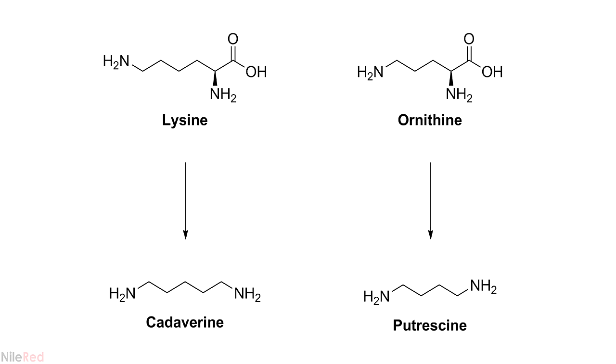Putrescine comes from the breakdown of the amino acid ornithine and cadaverine comes from lysine. What might be interesting to know is that these two nasty smelling amines are not only produced during putrefaction.